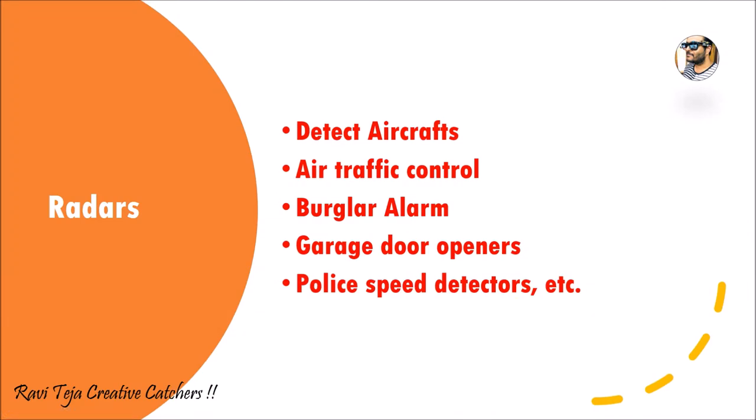The second most used application of microwaves is in radars. Radar means Radio Detection And Ranging. This radar system emits electromagnetic waves, or microwaves, and whenever any obstacle or any vehicle comes in the range of microwaves, these microwaves get reflected. These reflected microwaves are also called echoes.